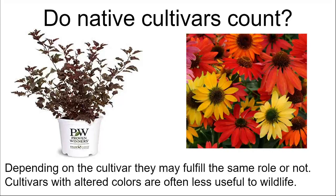If you start selecting based on color, that can be a problem. The ninebark Physocarpus opulifolius pictured has an unusual leaf color that looks pretty to us, but if you're an insect trying to find somewhere to lay your eggs, that weird color will confuse you. Similarly, echinacea hybrids with unusual flower colors — available at big box stores — might be lacking the ultraviolet signals that bees need to find flowers. Flowers originally evolved to look great to bees, not to us, so we have to be careful.